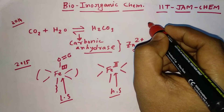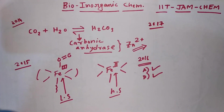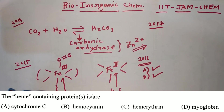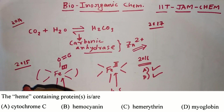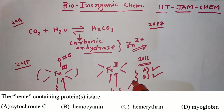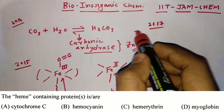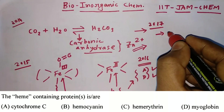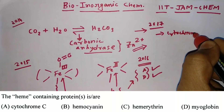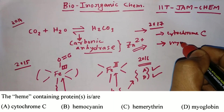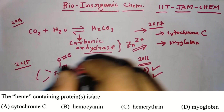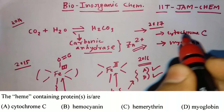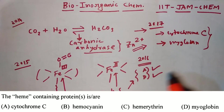Coming to JAM 2017, the MSQ question asks which are heme-containing proteins: cytochrome C, hemocyanin, hemierythrin, or myoglobin. The answer is cytochrome C and myoglobin, because hemocyanin and hemierythrin do not contain any heme group. So options A and D are correct.